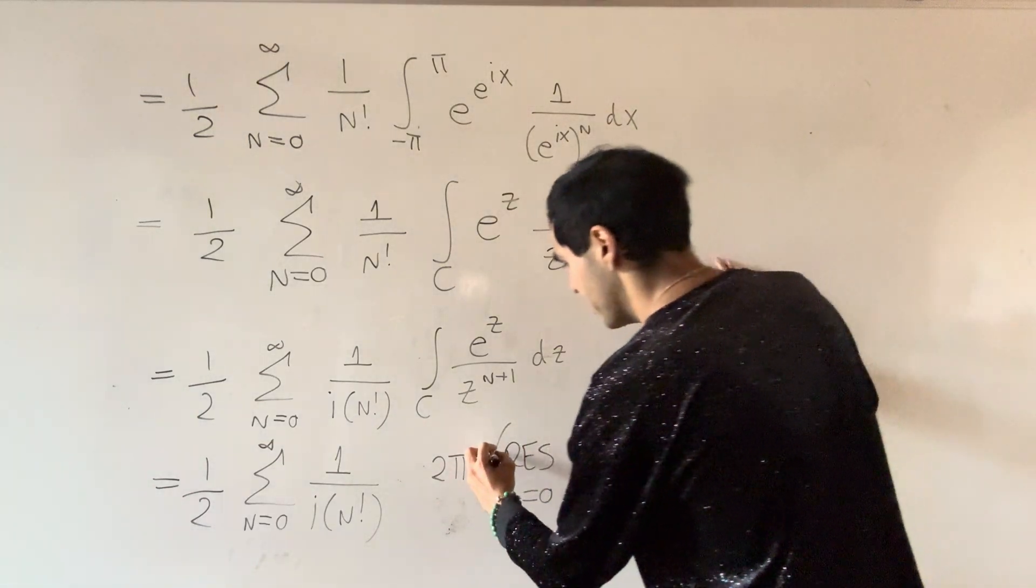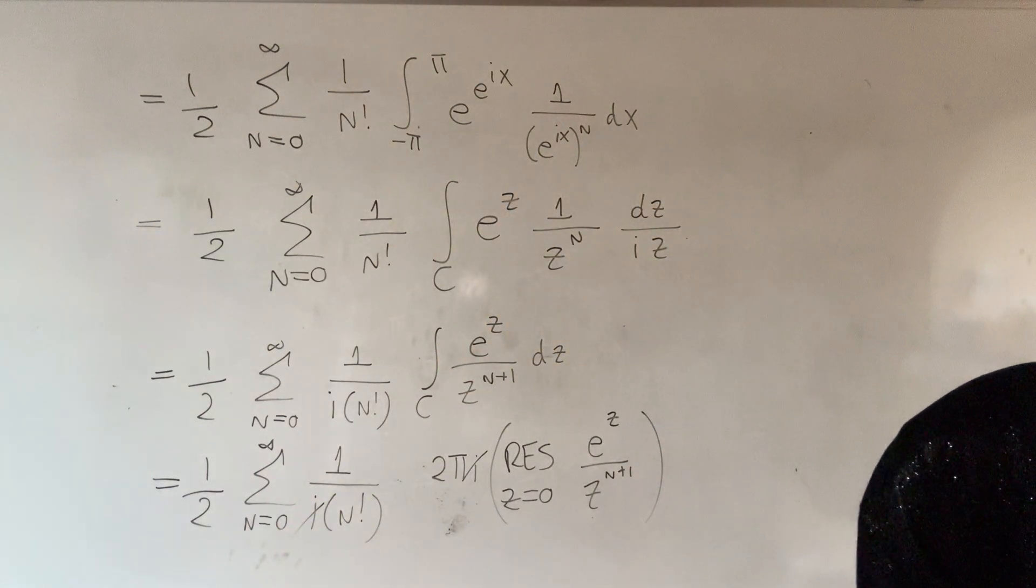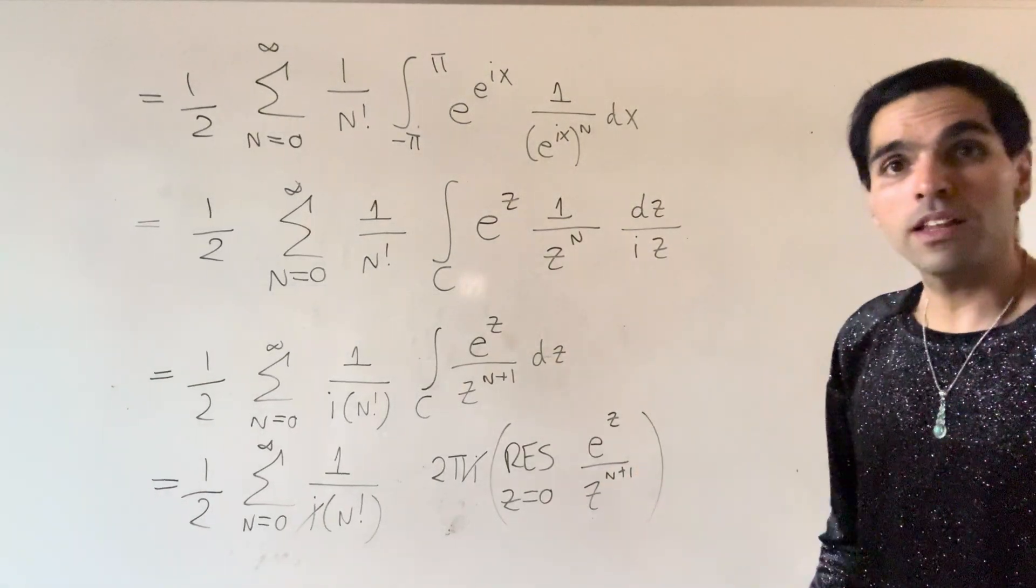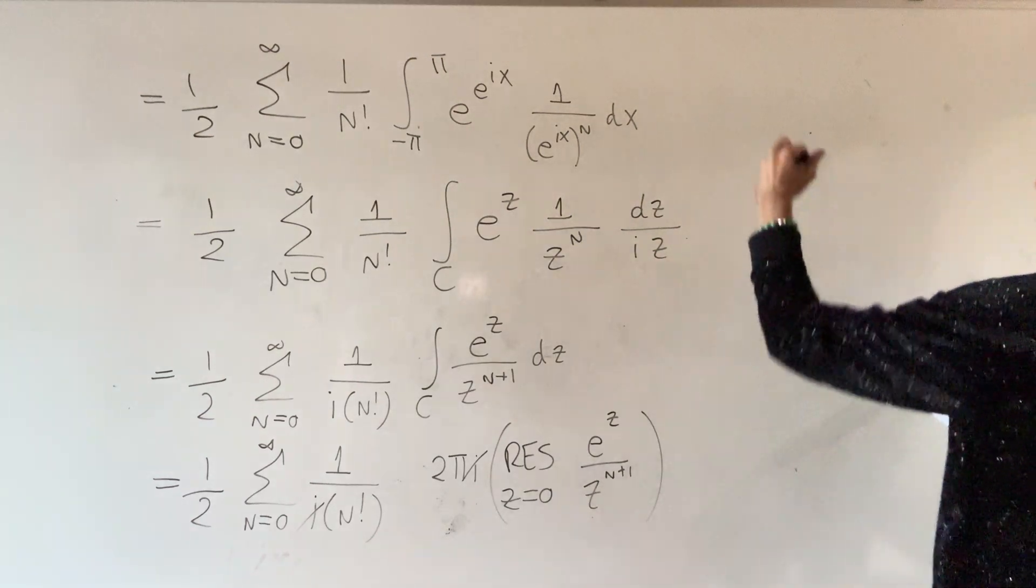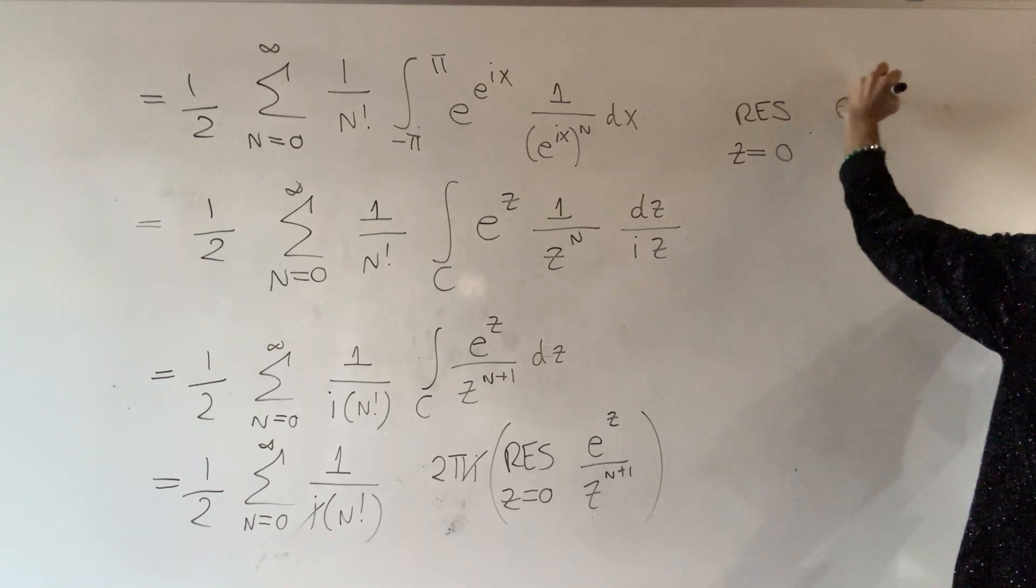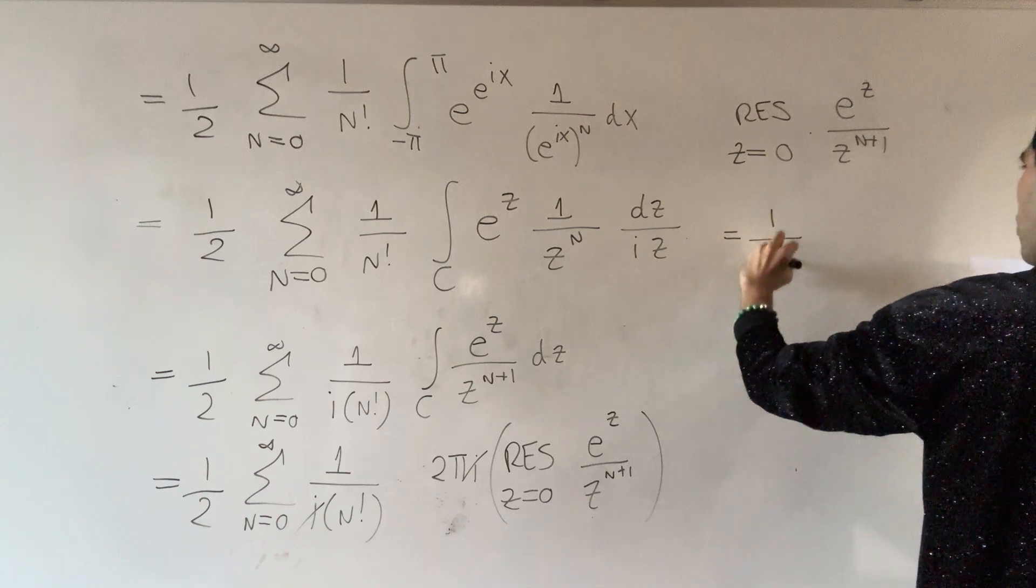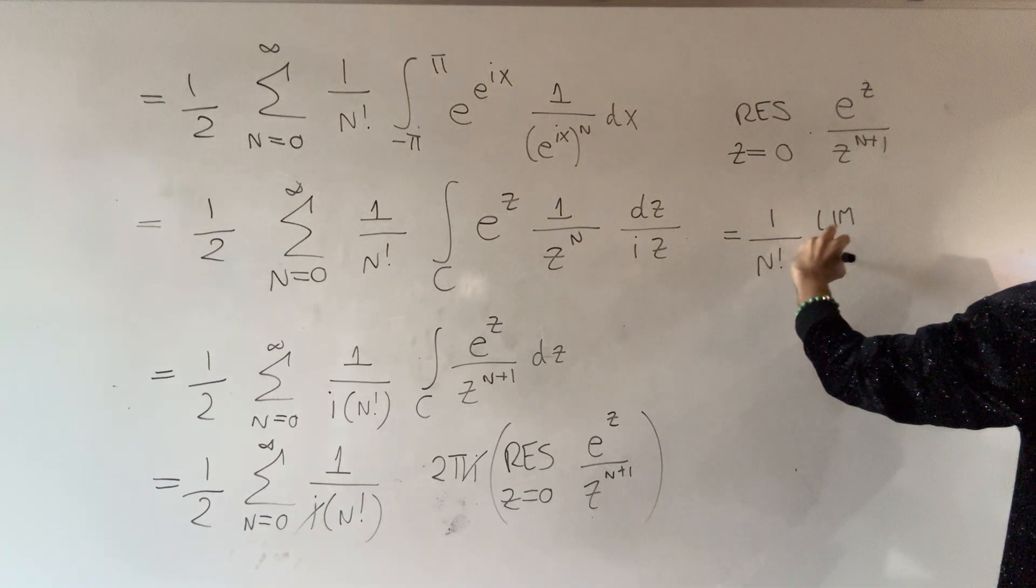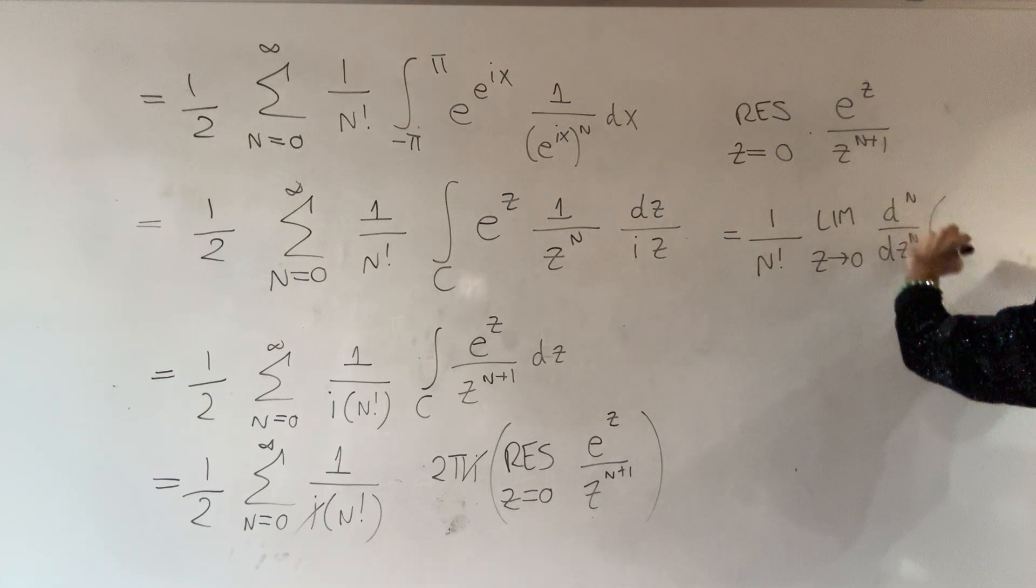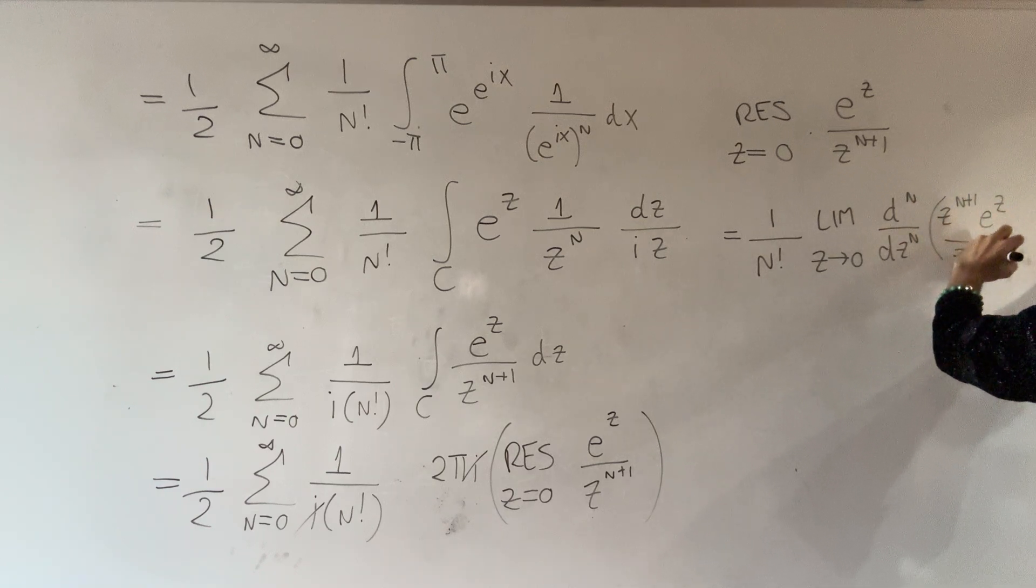Which, by the way, the i's here cancel out. It's one simplification. And for this, we just use the fact that we have a pole of order n plus one here. So, there's a nice derivative formula to calculate that residue. So, the residue at z equals zero, of e to the z, over z to the n plus one, is one over n factorial, times the limit, as z goes to zero, of dn over dz to the n, times z to the n plus one, e to the z, over z to the n plus one.